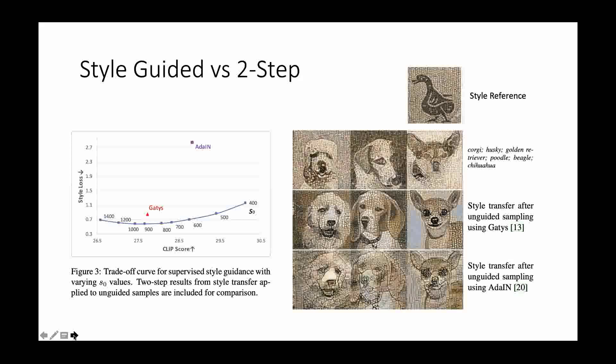Additionally, we have compared our one-step method with two-step alternatives, where the first step is generating an unguided image and then applying an additional style transfer model, either Gatys or AdaIN. As shown on the left-hand side, our one-step method is actually better to achieve lower style loss when the CLIP score, which is the correlation between text and image, is equivalent.